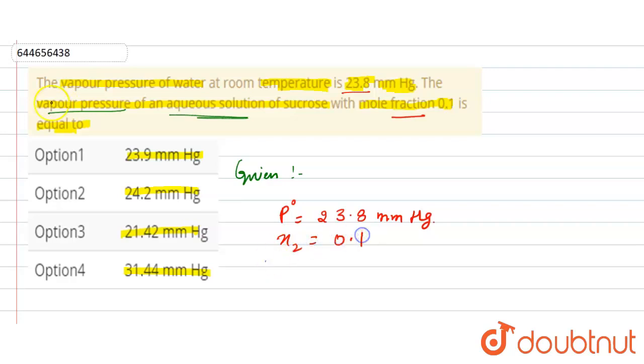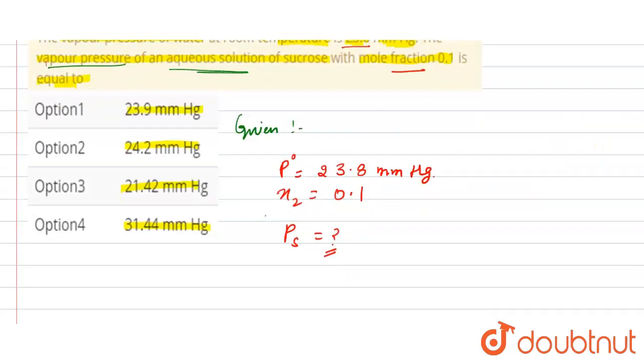The mole fraction given is 0.1. In the question, we need to find the vapor pressure of the aqueous solution of sucrose, which is Ps. According to Raoult's law,